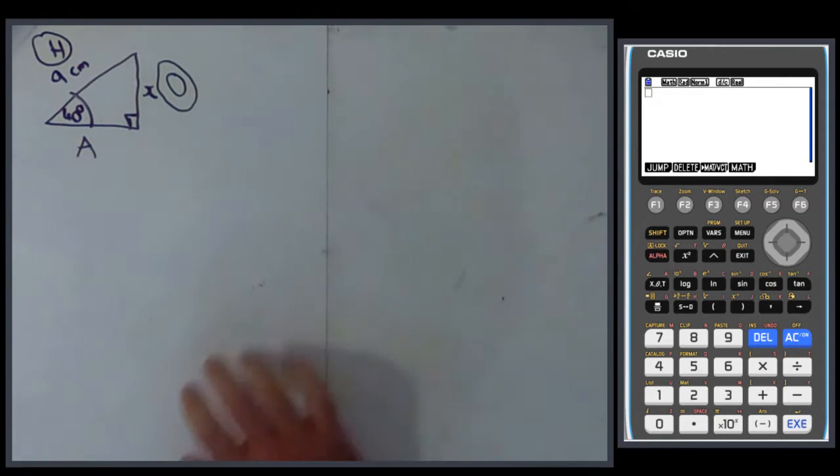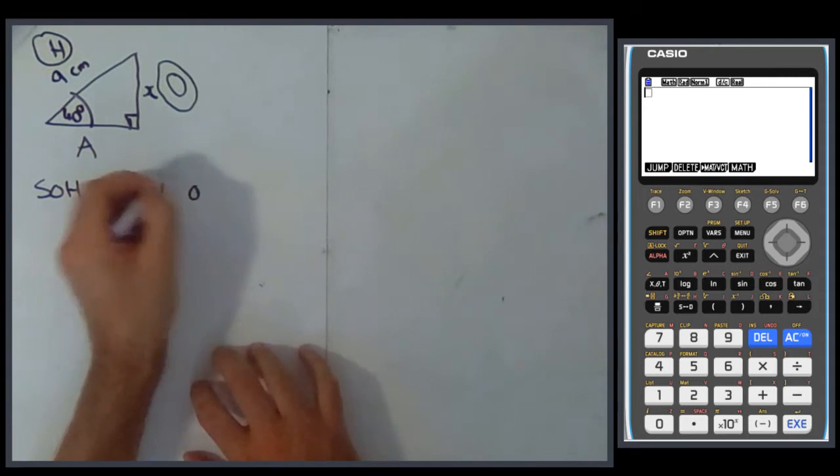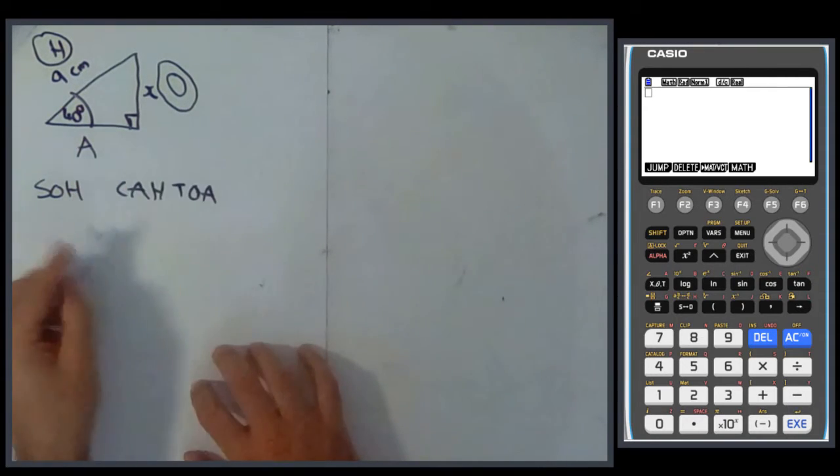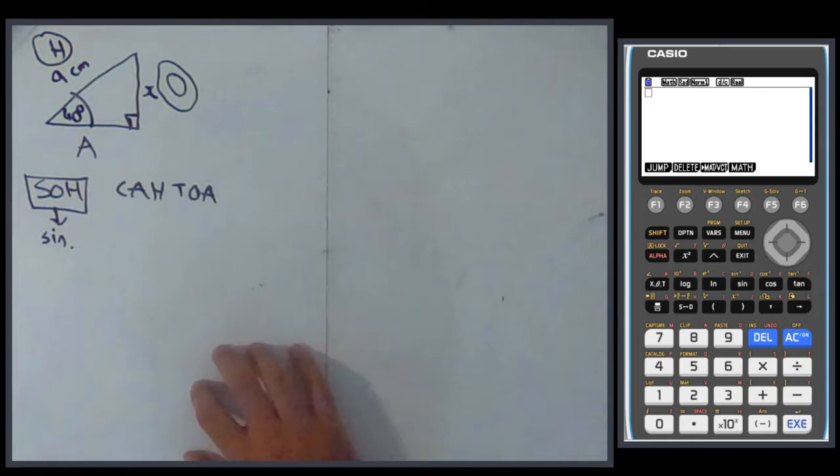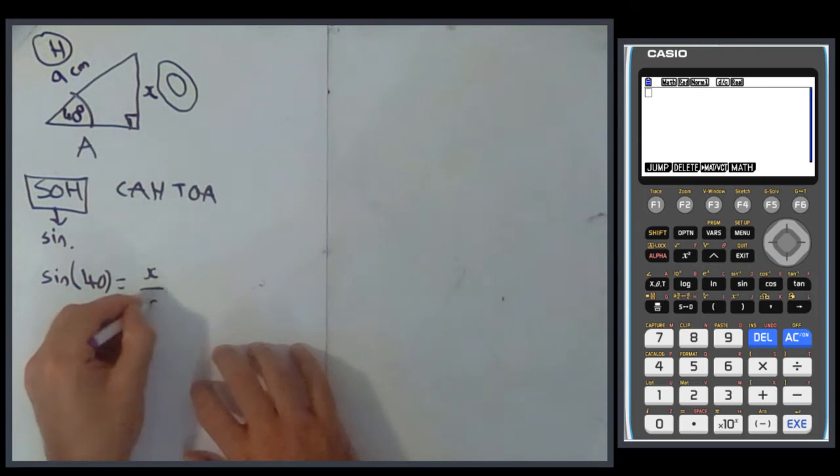Right, so HOA ring-ring, now we need to decide, are we on SOH, CAH, or TOA? So which one of these, the last two letters, we're looking for an O and an H. The only one with an O and an H in is SOH. SOH means sine, and it actually means sine angle equals O over H. So that means that sine 40 equals O, well O is x, over H, H is 9. So we've now formed an equation.